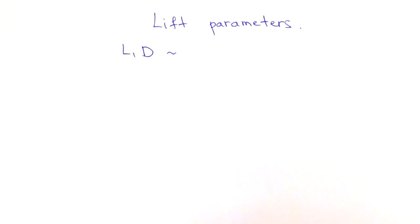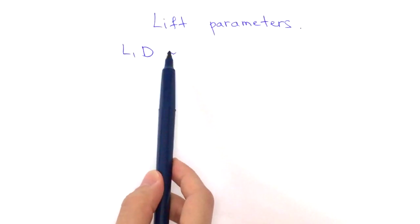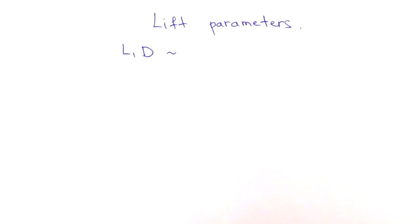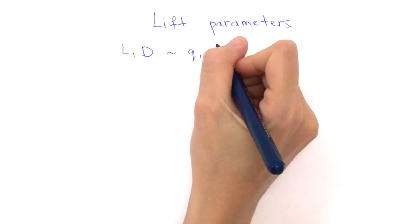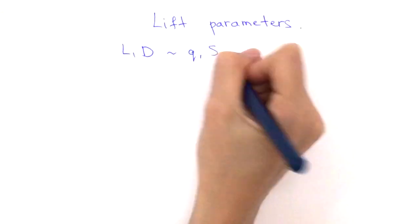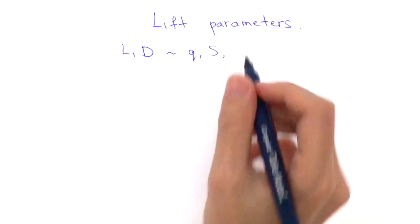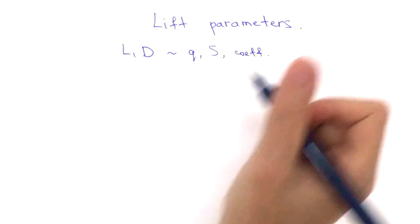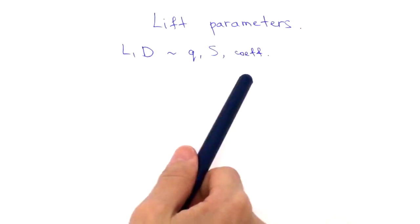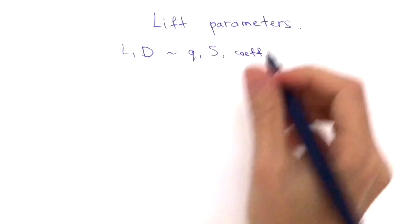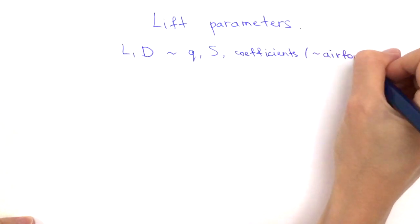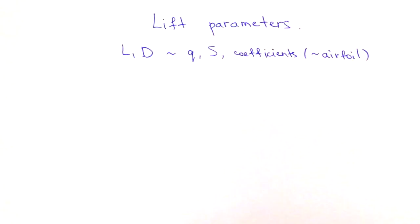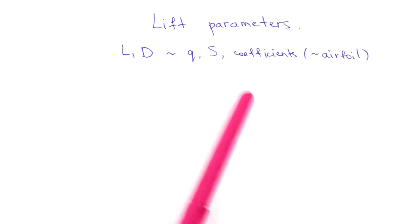Lift and drag are proportional to dynamic pressure, the area of the wing, and specific coefficients which are specific for each airfoil. These coefficients depend on the type of the airfoil. Let's write down the actual formulas and talk about those coefficients in more detail.